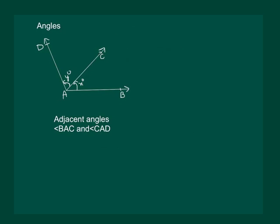Moreover, when two angles are adjacent then their sum X plus Y is always equal to the angle formed by the two non-common arms. That means AB and AD. So, that means angle BAD is equal to angle X plus angle Y.